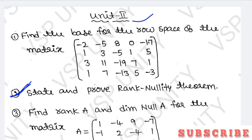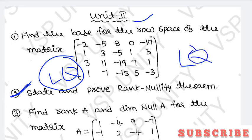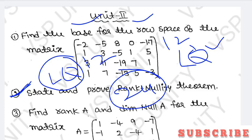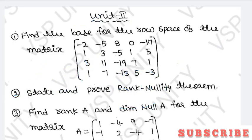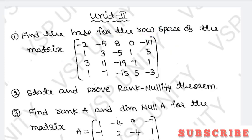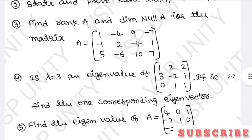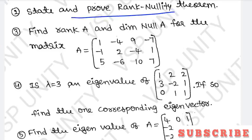The second unit is very important. If you know the long questions in unit two, you can use those concepts in unit three as well — eigenvalues and eigenvectors. Units two and three together cover 12 plus 12 = 24 marks, which is 100% dependent on knowing how to find eigenvalues and eigenvectors. First question: find the basis for the row space of the matrix. Next: state and prove the rank nullity theorem. Third question: find rank A and dimension of null space of A for a given matrix. The rank nullity theorem problems are also very important.